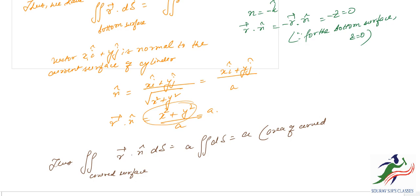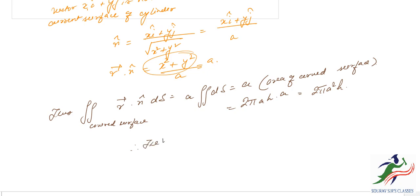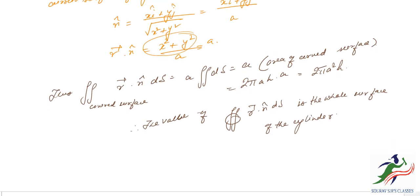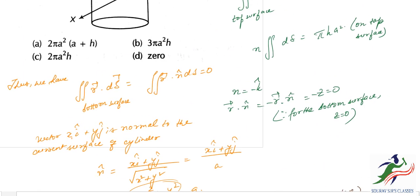The area of the curved surface is 2πah, so a times 2πah equals 2πa²h. Therefore the total surface integral equals πa²h (top) plus 0 (bottom) plus 2πa²h (curved) which gives the final answer, 3πa²h — that is answer B.